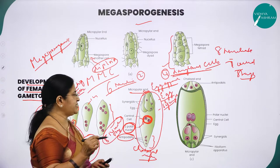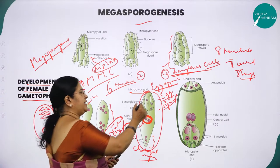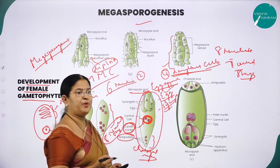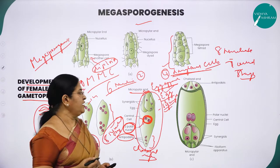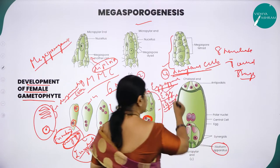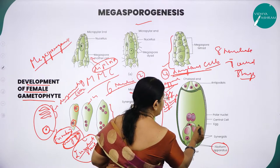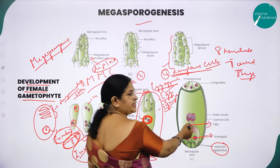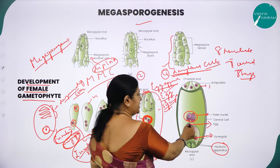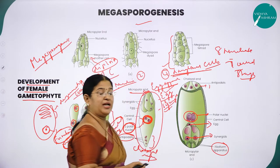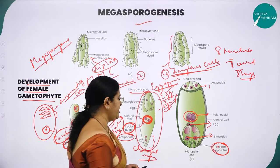Three cells are grouped towards the micropylar end — these are the egg apparatus consisting of one egg cell and two synergids. Three more cells move toward the chalazal region — these are called antipodal cells, which will degenerate later. In the synergid region, there is a cellular thickening called the filiform apparatus. This is how a matured embryo sac looks.